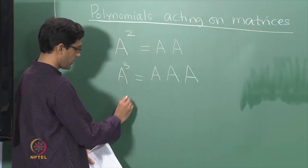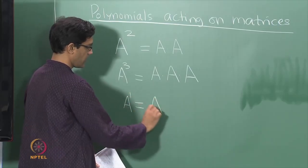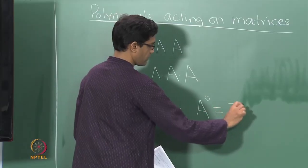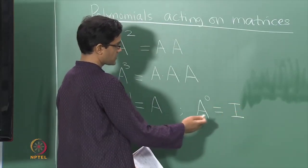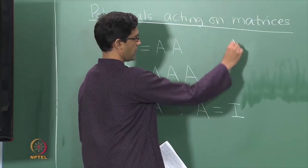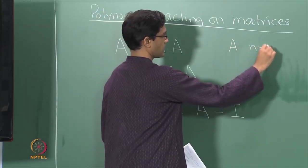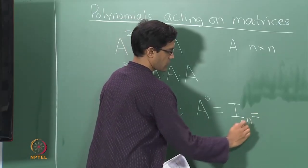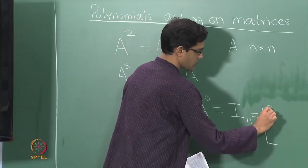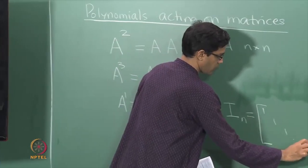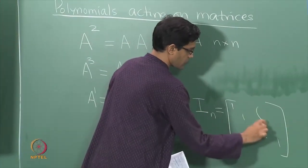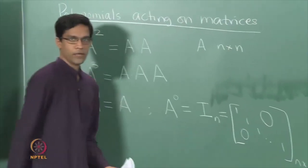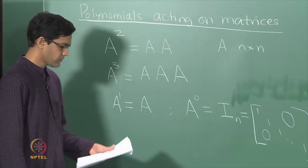Now let us define A^1 as just A, and let us define A^0 to be the identity matrix. If A is an n×n matrix, then the identity matrix here is also of size n×n. I will denote it by I_n, which refers to the matrix with 1s along the diagonal, 0s everywhere else, and having size n×n. So the 0th power of a matrix is defined to be the identity.